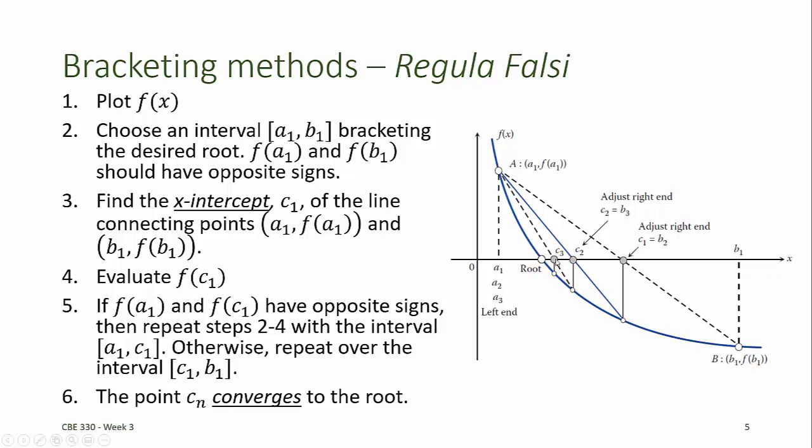we find the intercept c3 of the line connecting a1, f at a1 to c2, f at c2. These bracketing methods are very robust, but they do require that the function f changes sign at the root, which is not always the case. In the next video, we'll introduce what are called the open methods for root finding.